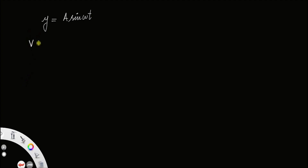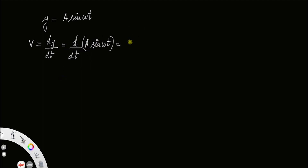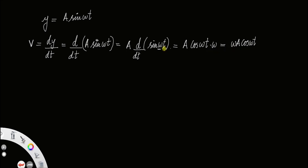To find the velocity from displacement, you have to differentiate with respect to t. So, velocity = d/dt of y = A sin(ωt). Since the amplitude A is always a constant, you can take it out of the derivative: A · d/dt of sin(ωt). The derivative of sin is cos, so we get A cos(ωt). Multiplying by the chain rule constant ω, the expression for velocity is ωA cos(ωt).